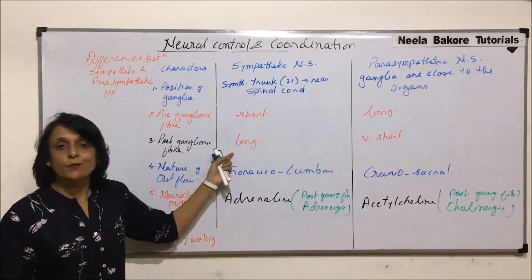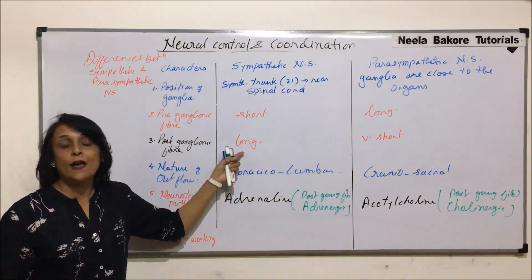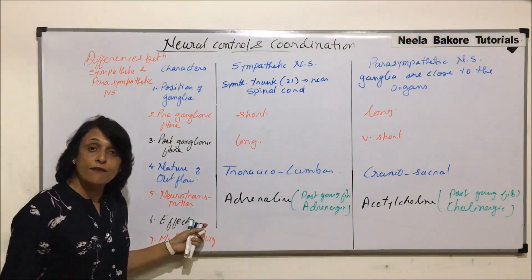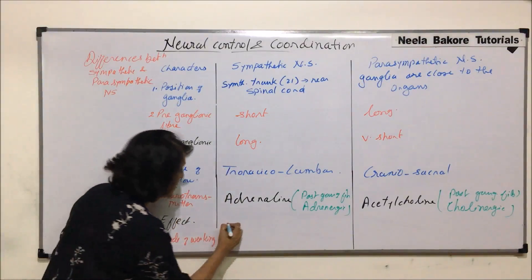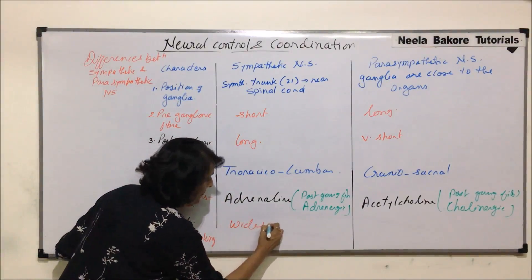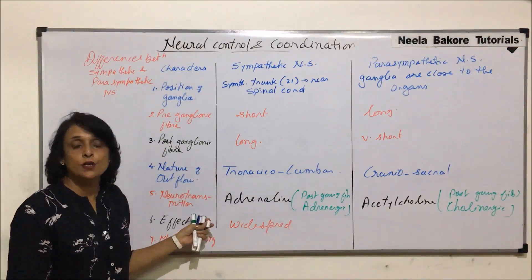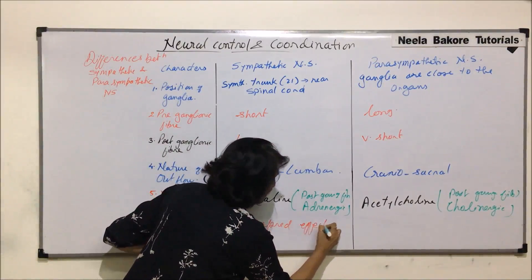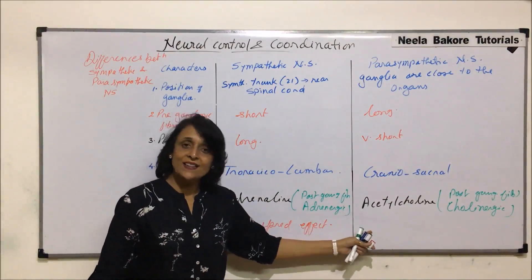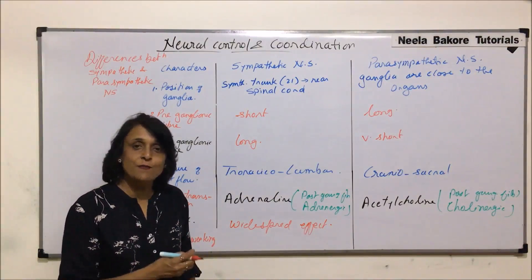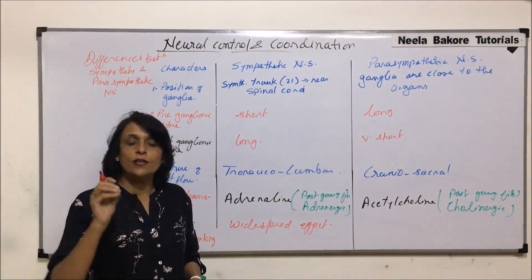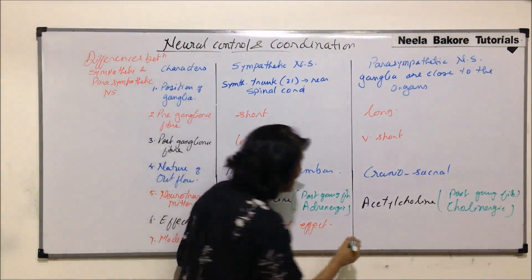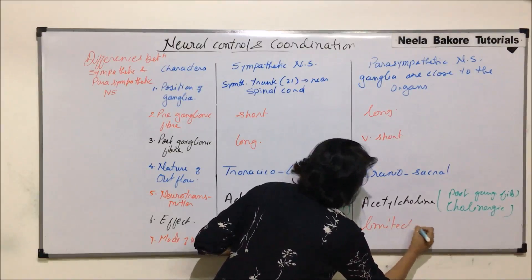Regarding effect: in the sympathetic nervous system, because the post-ganglionic fiber is very long it undergoes branching, and that is why the effect of this nervous system is widespread. In the parasympathetic nervous system, because the post-ganglionic fiber is very short and immediately enters the organ, its effect is very local and limited.